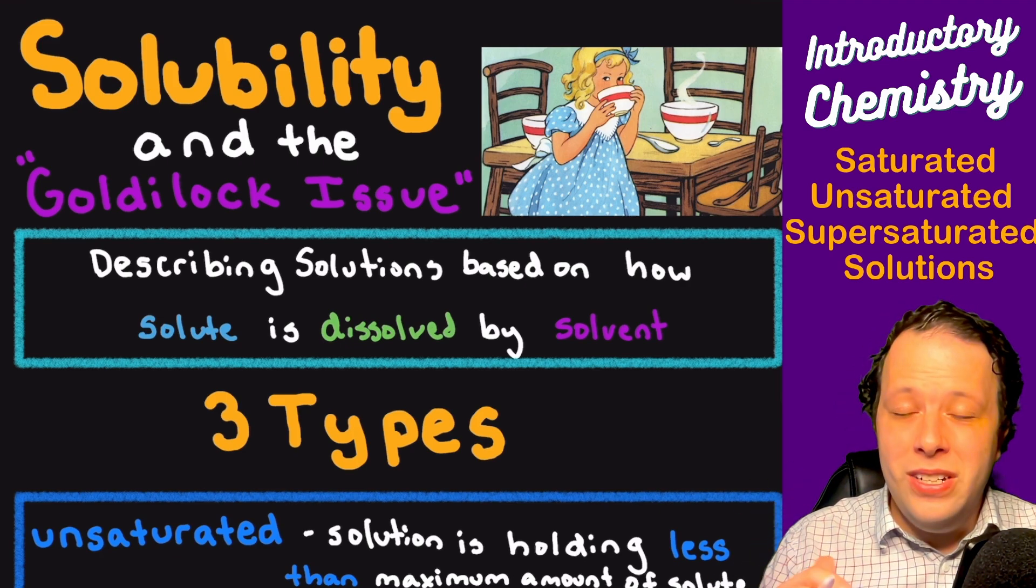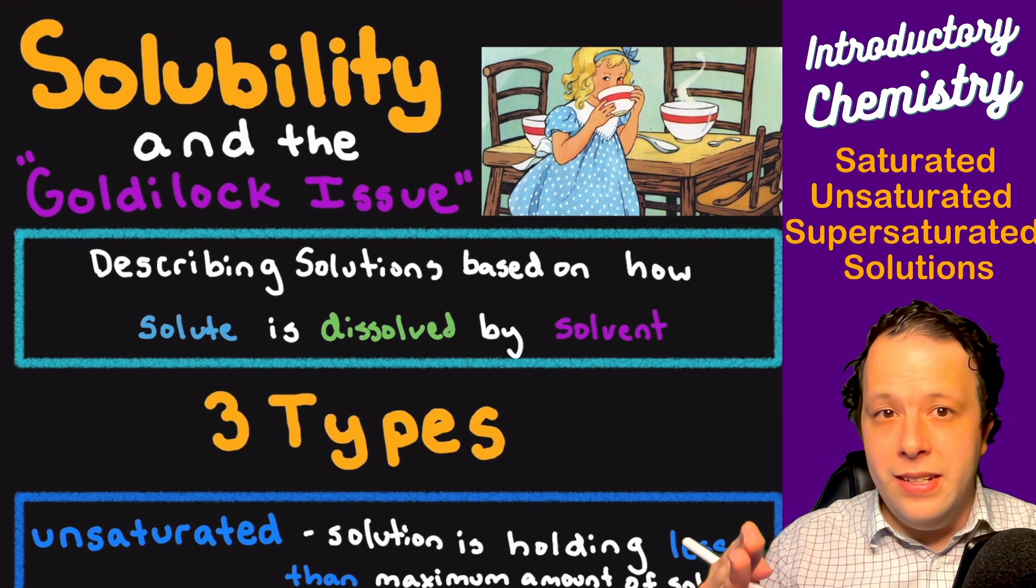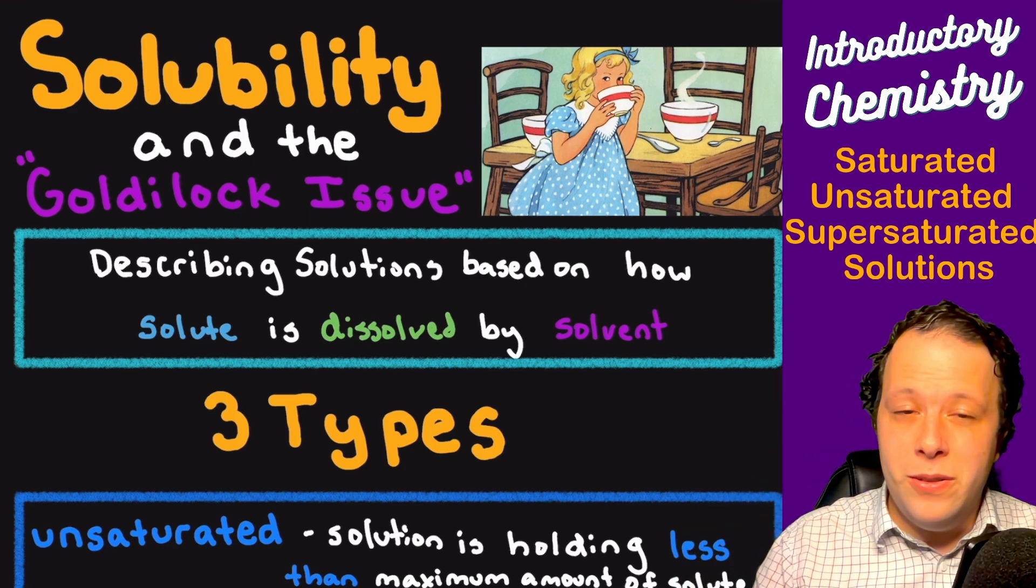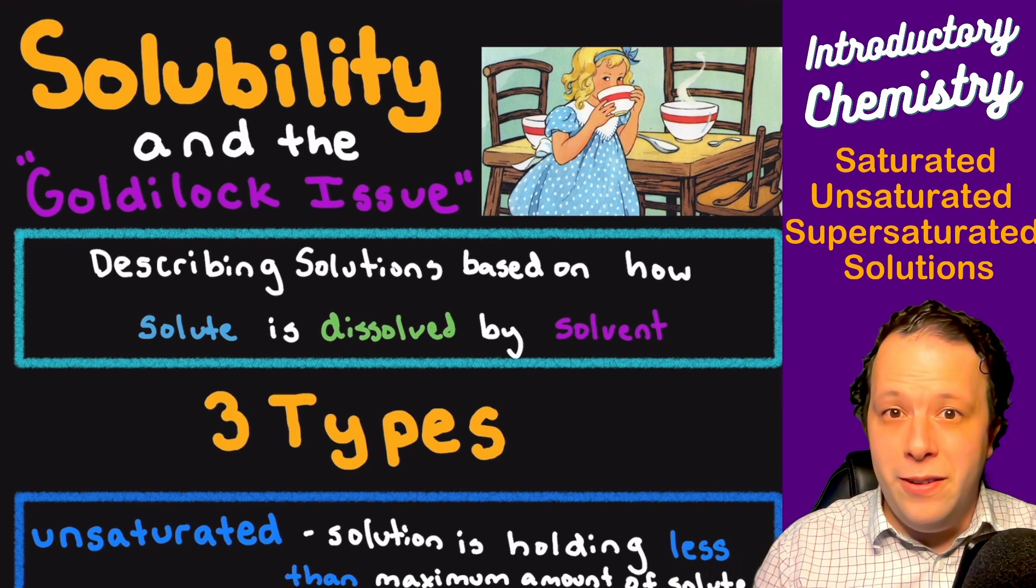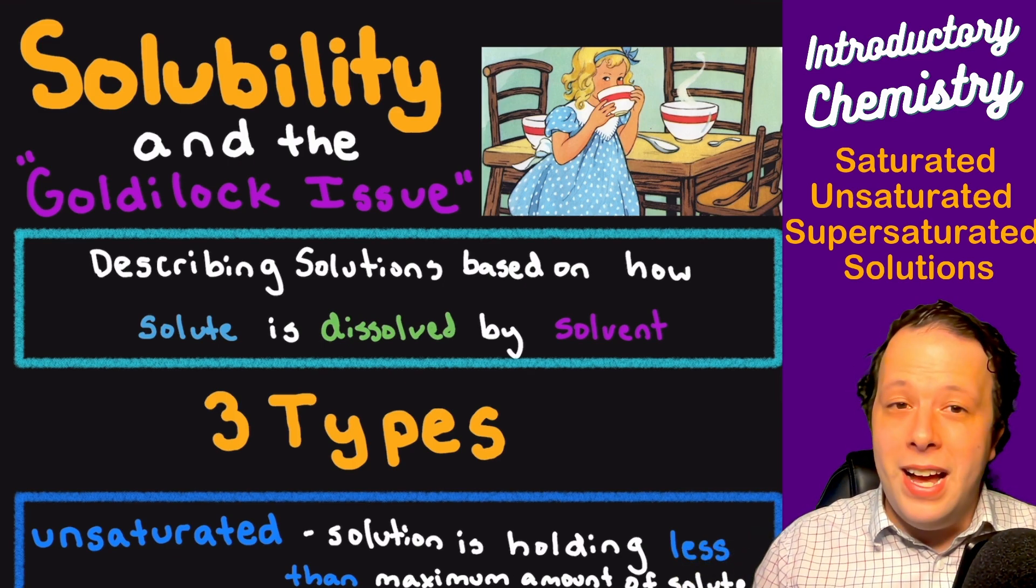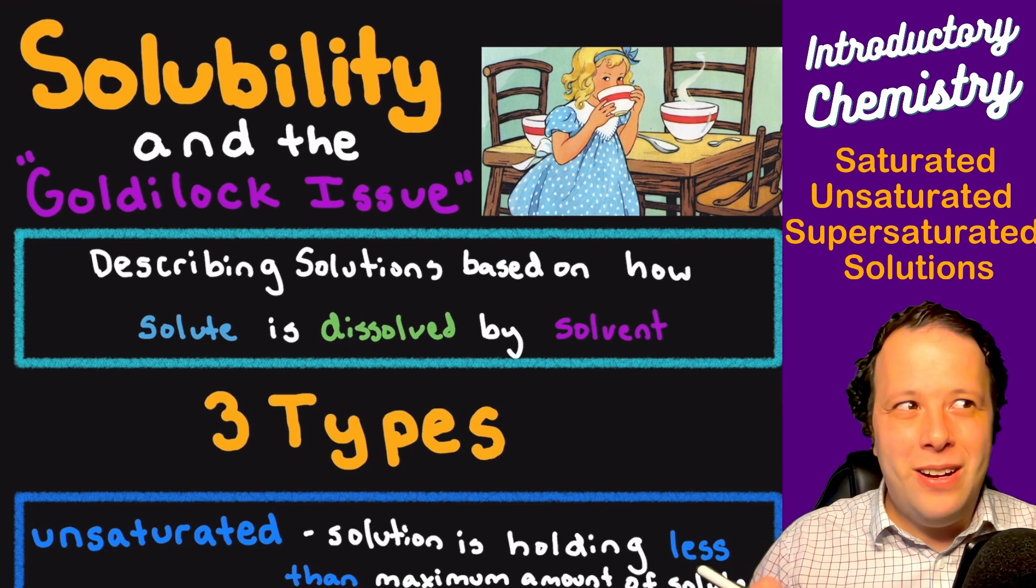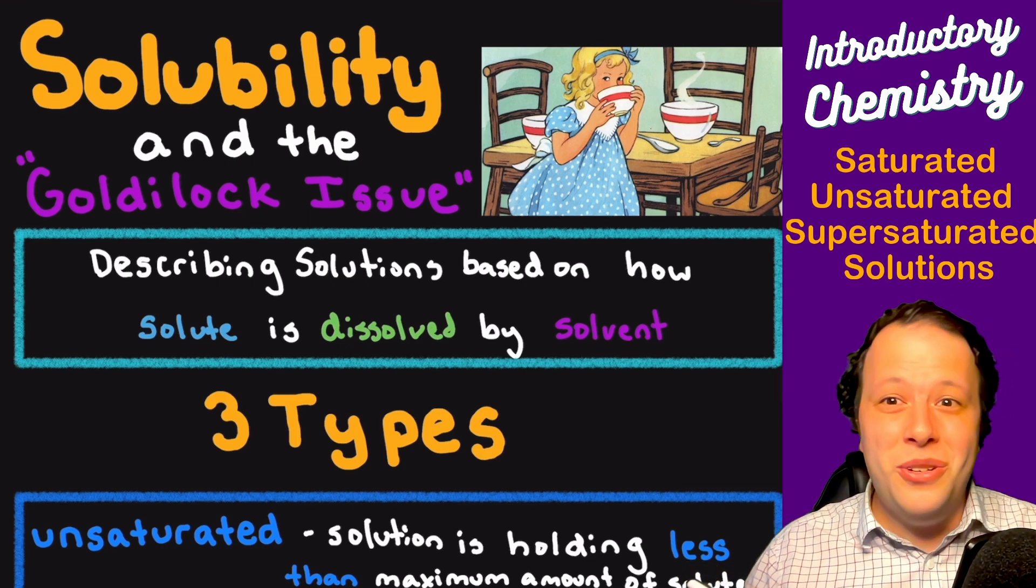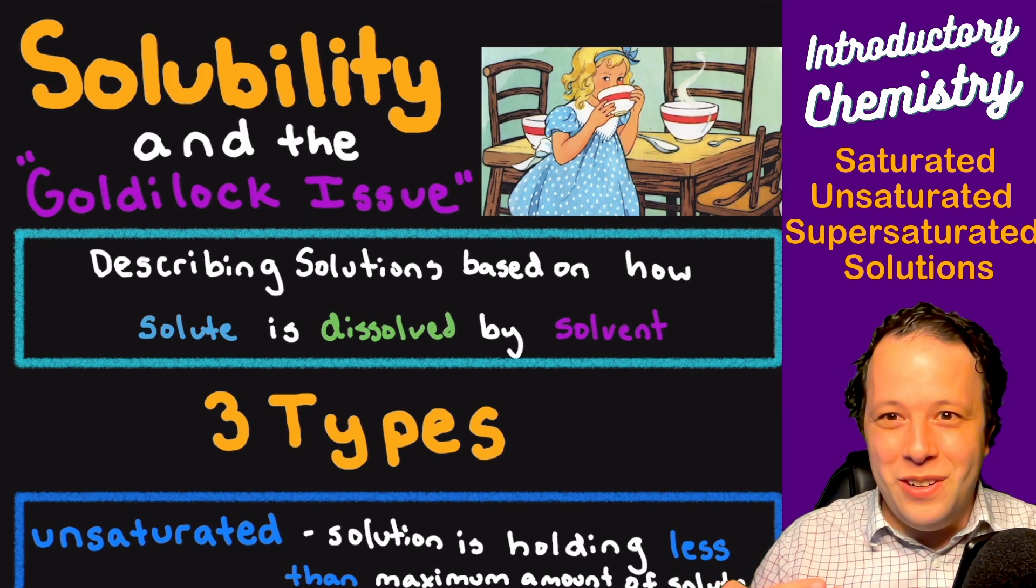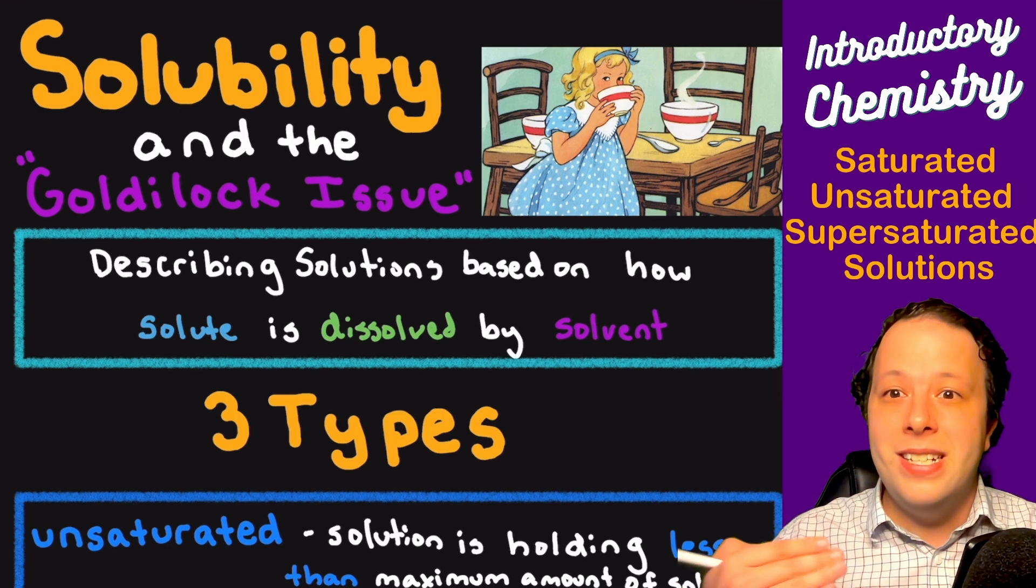If you remember, a solution is composed of both a solute and the solvent. The solute was the minor part which is dissolved by the solvent which is the major component. Depending on how much solute you have, so in a way like is it too sweet or is it too salty when you're thinking of trying to dissolve these different things, will help you actually describe saturation.